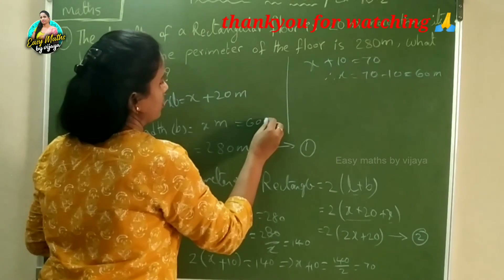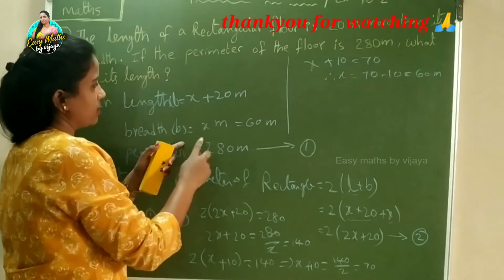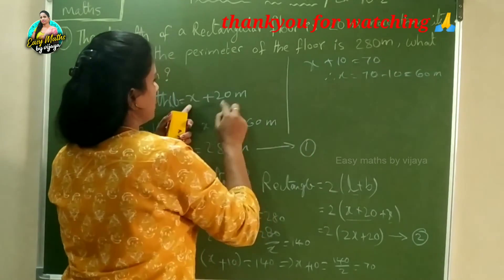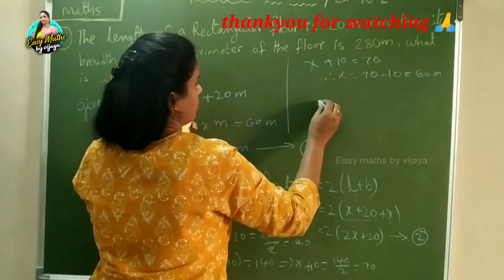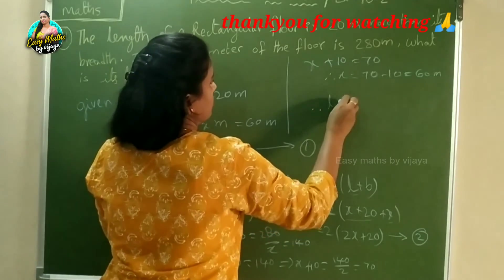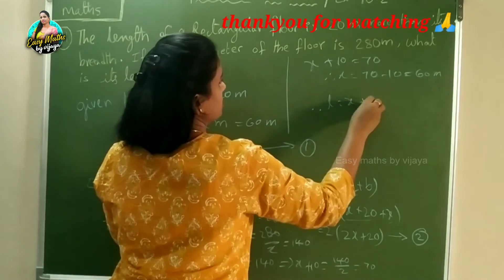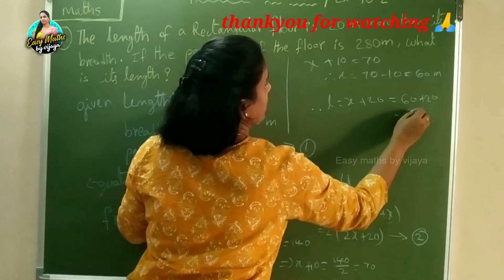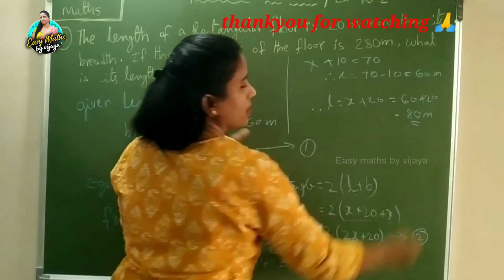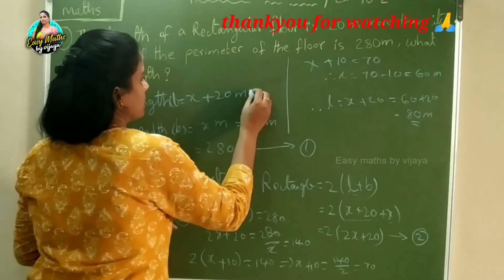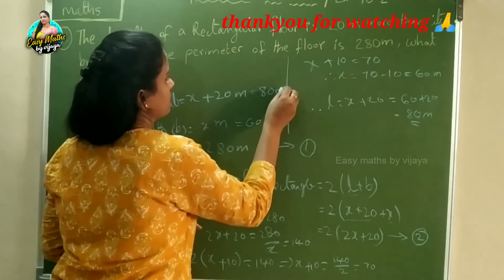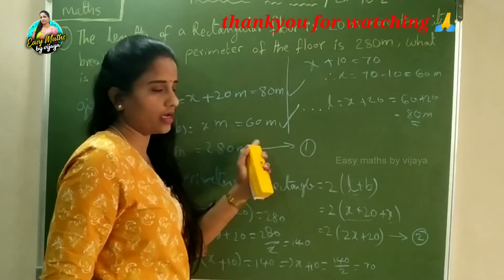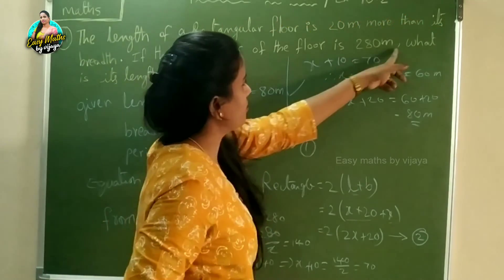Now we can find the length. Substitute the value of x into the length equation. Therefore, length = x + 20 = 60 + 20 = 80 meters.